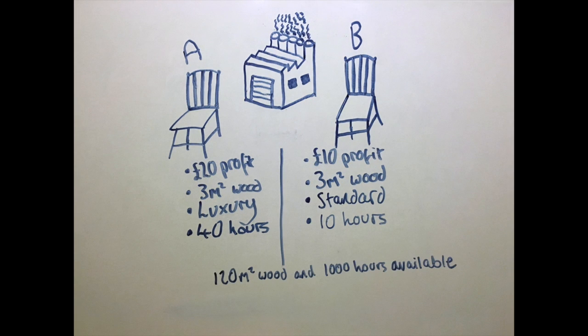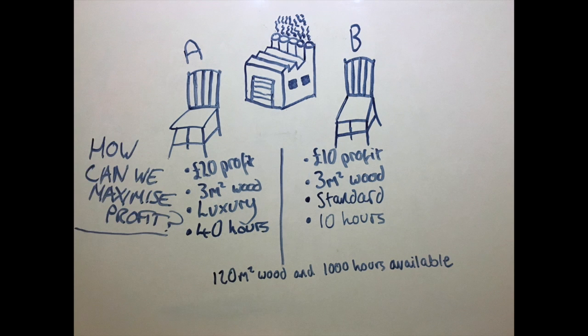Given that 120m² of wood and 1,000 man hours are available each week, how many of each type of chair should be made per week to maximize the profit?